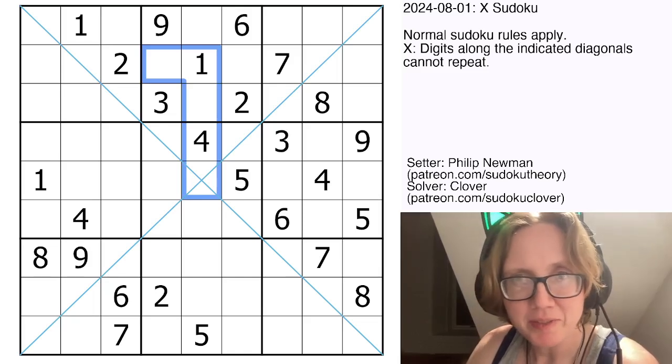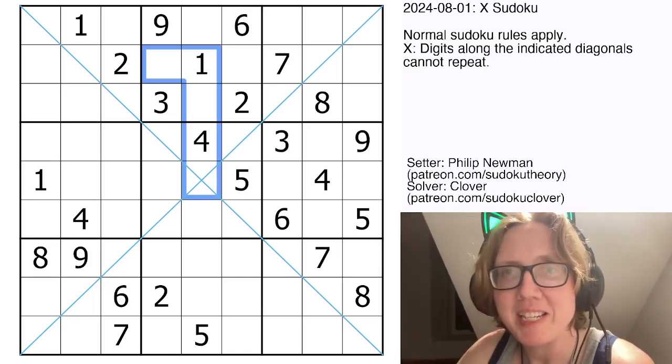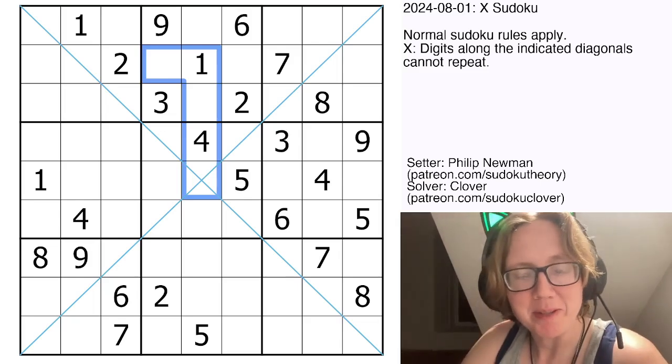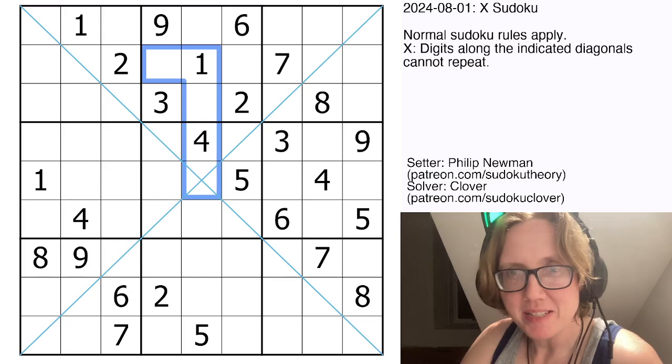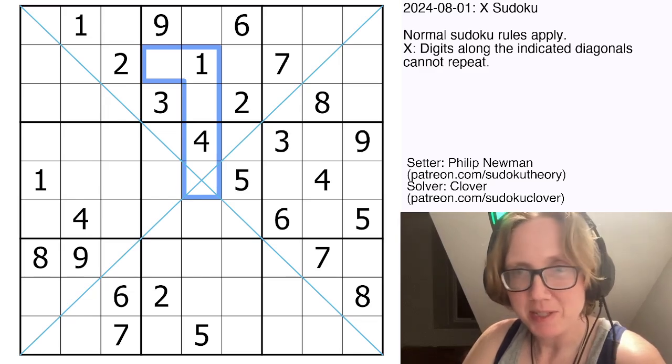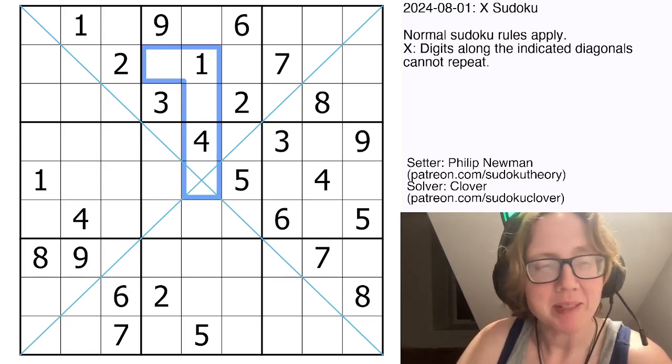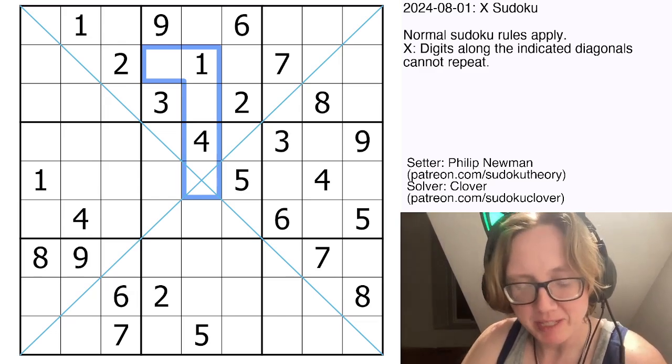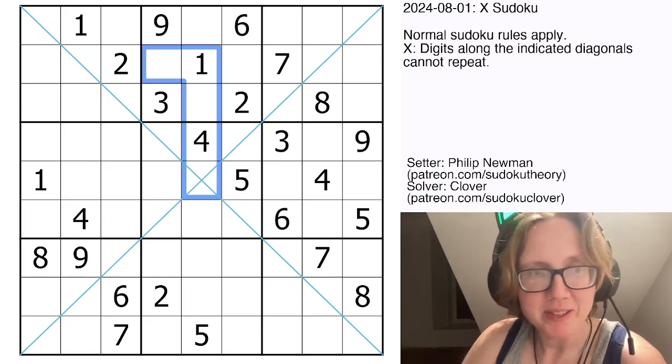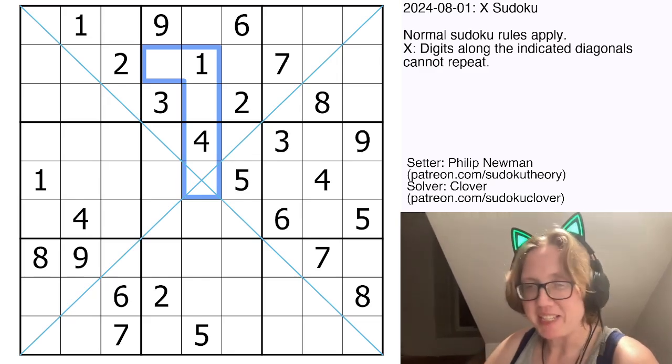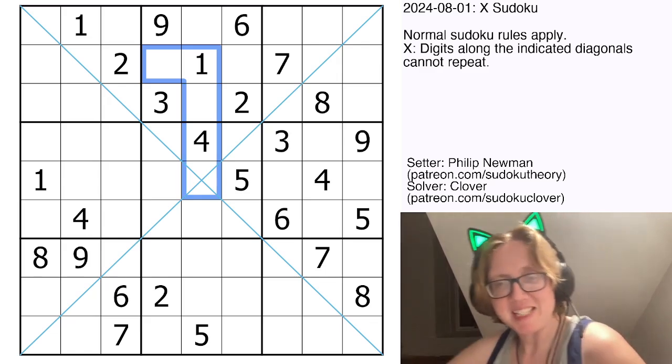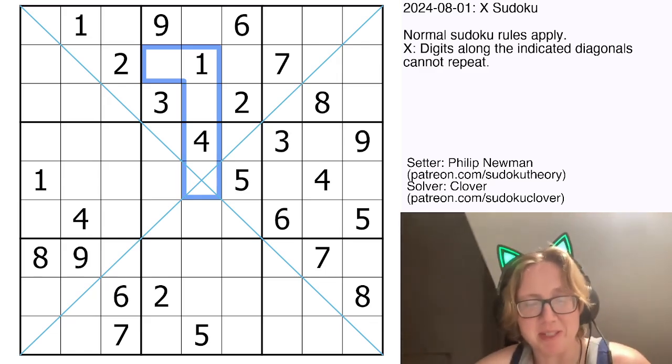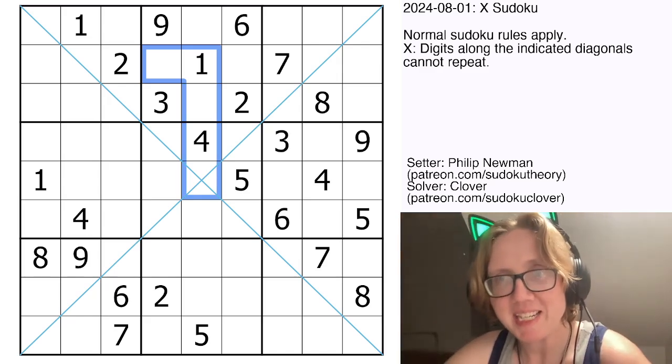Hello my friends, I'm Clover and today we are solving X-Sudoku by Philip Newman. This puzzle is from August 1st, 2024, and that means something kind of fun. Every year in August for Gas we do a month-long guessing game where you're given the opportunity to guess the variant of Sudoku that we're going to set the following day and publish.